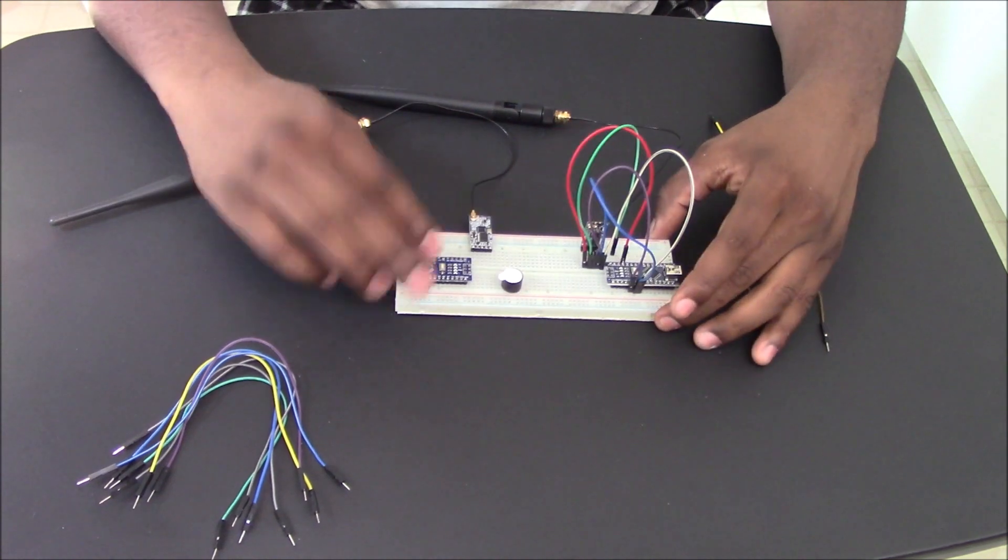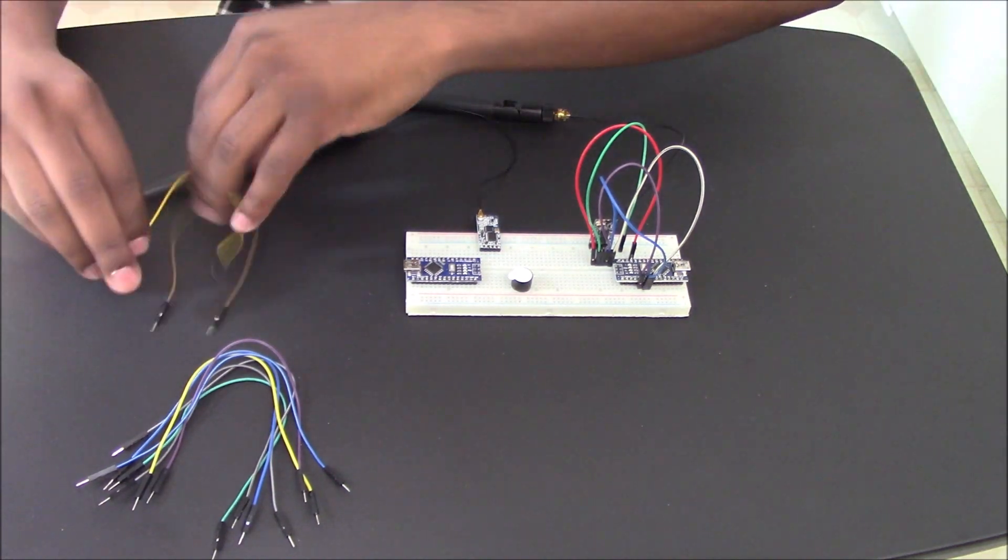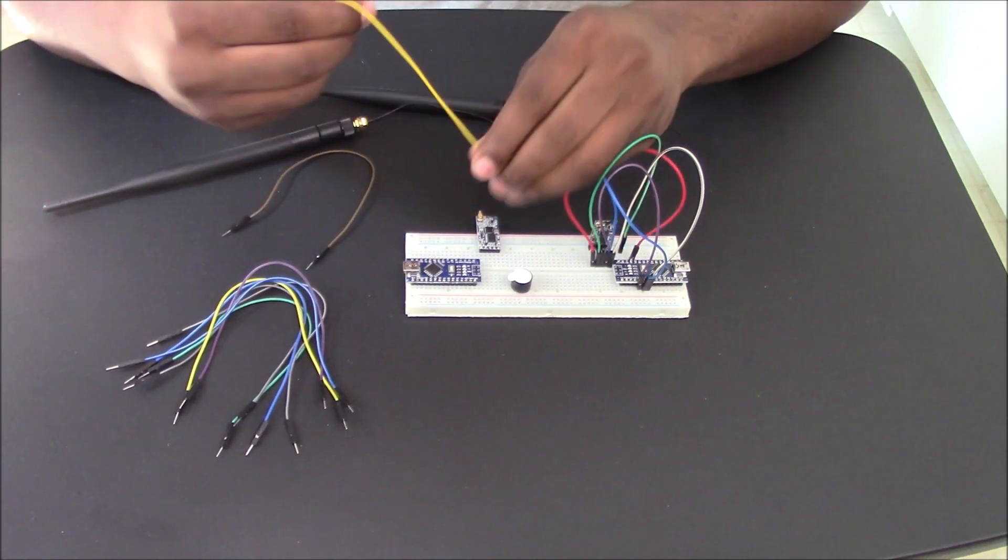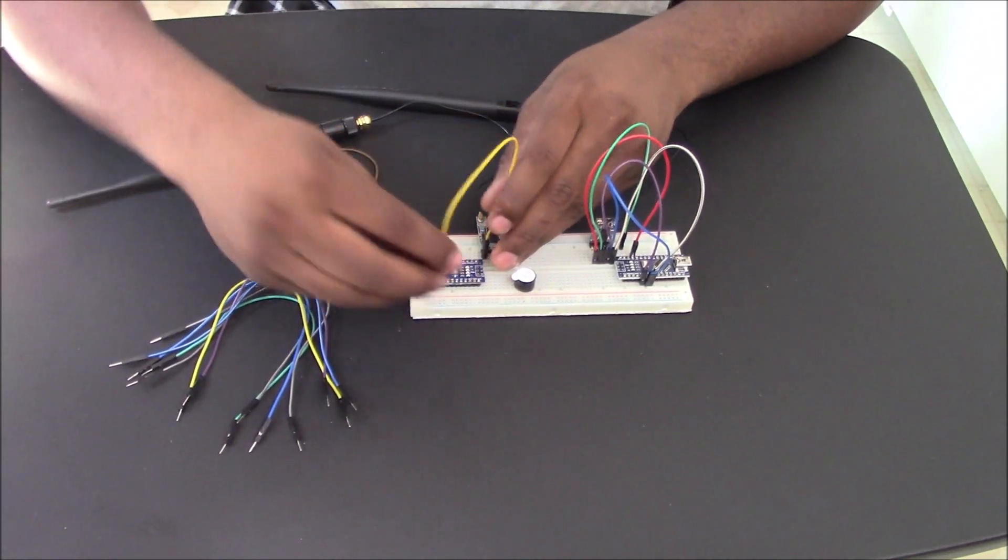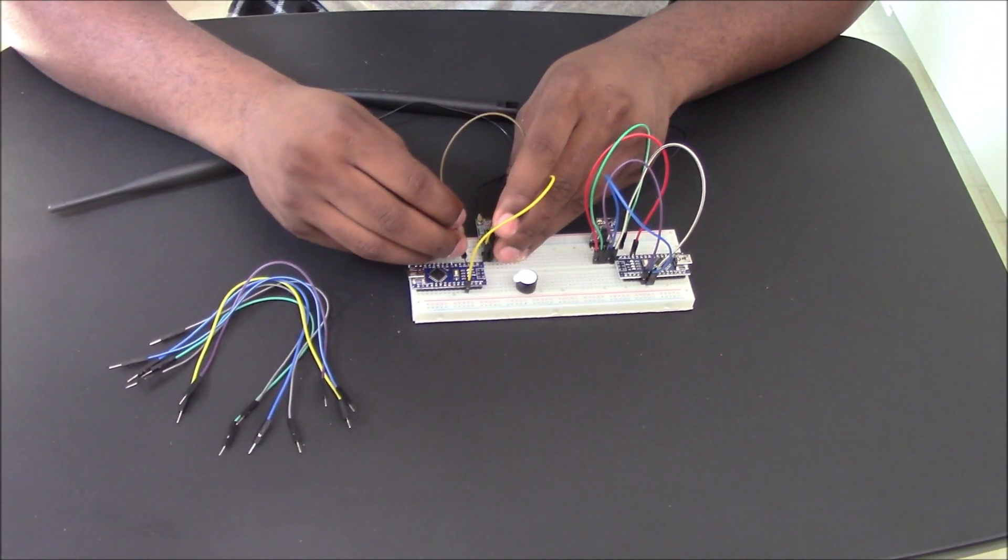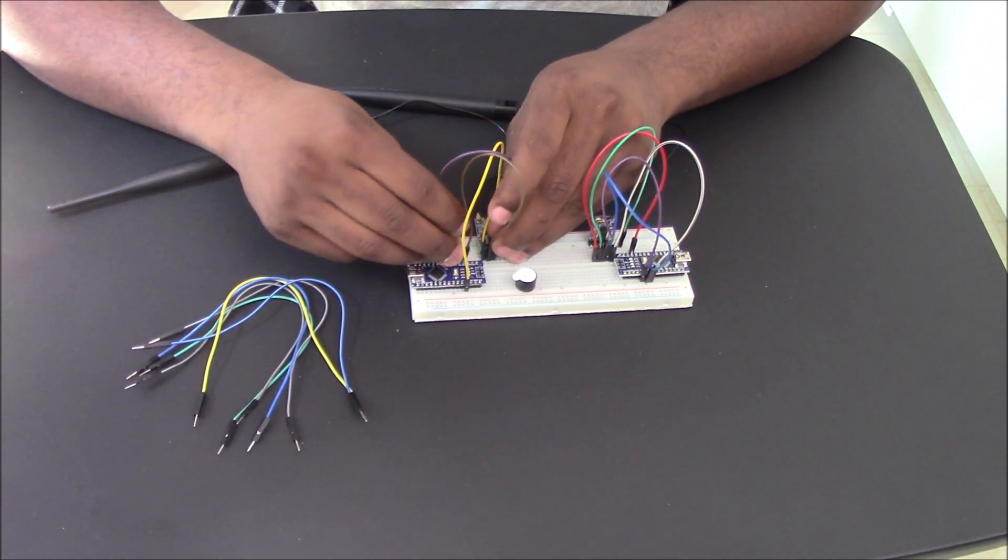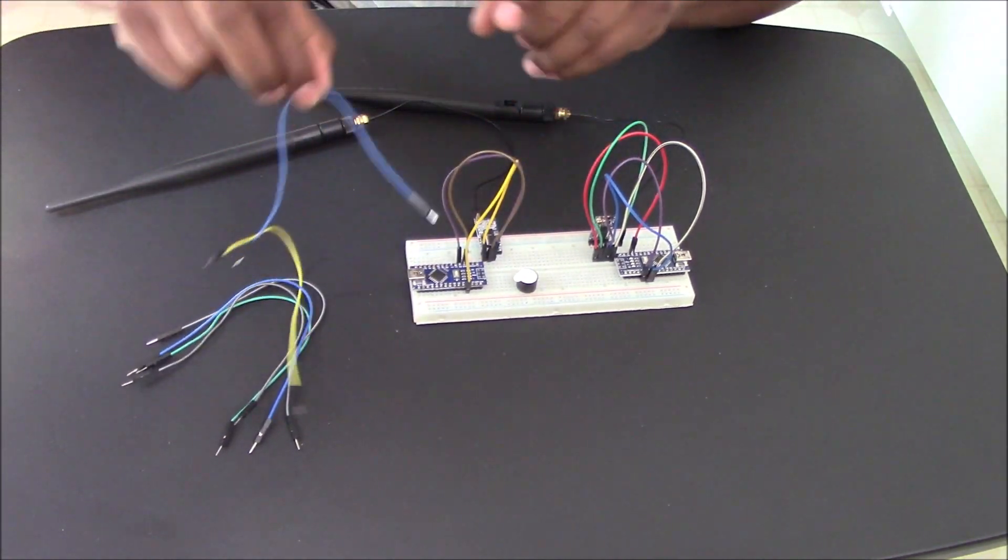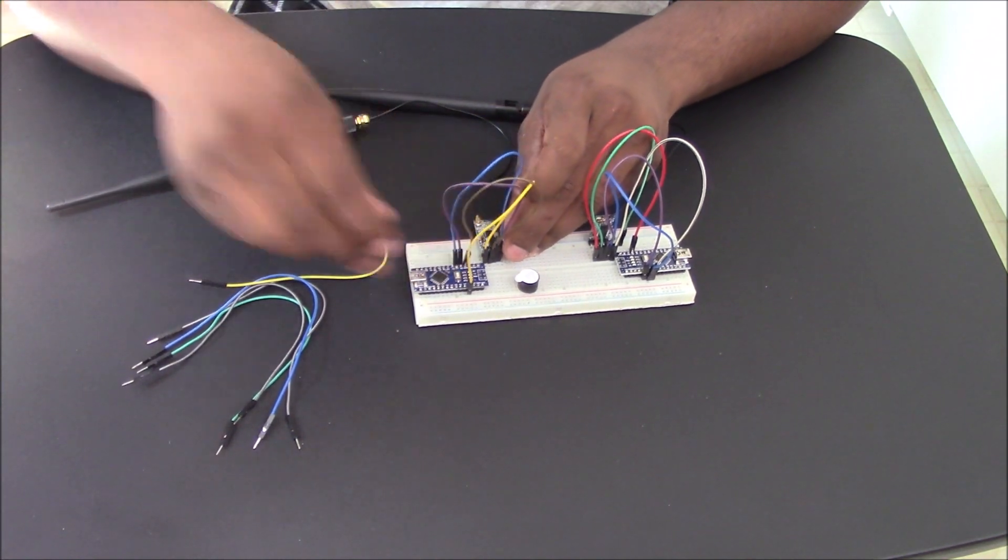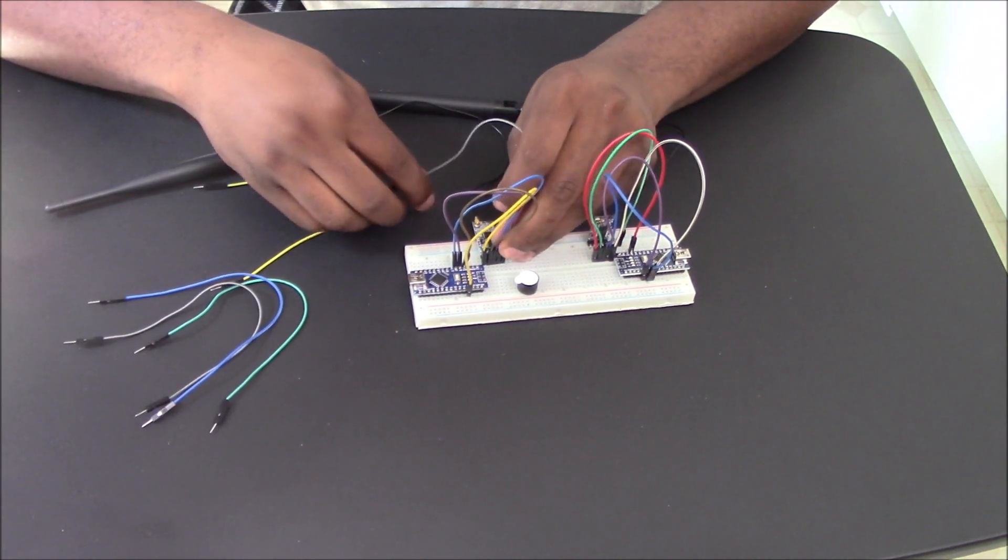And on this side, this is going to be our receiver. This is going to be our transmitter. So for our receiver now, what we're going to do is get your VCC, and we're going to connect that to the five volts of the microcontroller. Connect your ground to ground, RX to digital pin two, TX to digital pin three. Make sure it's a digital pin and not an analog pin, or it will not work.